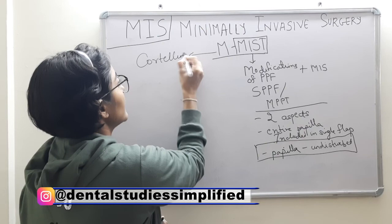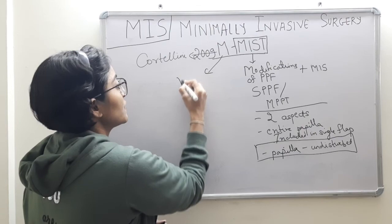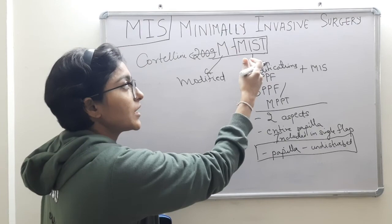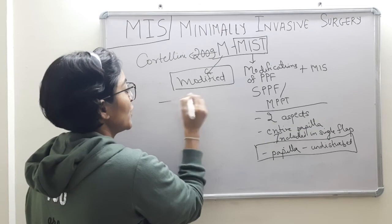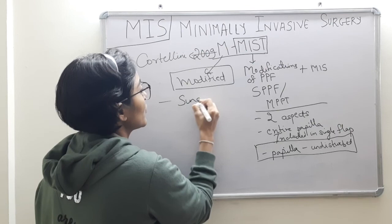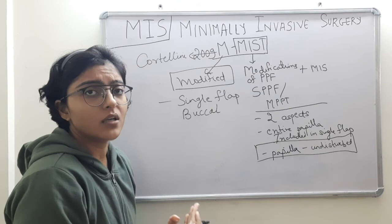MMIST was given by Cortellini and Tonetti in the year 2009. According to the original article JCP 2009, MMIST — M stands for Modified, that is modification of the MIST technique. The first modification is similar to single flap approach: the defect is approached from a single aspect, that is a single flap is manipulated, preferably buccal or labial.